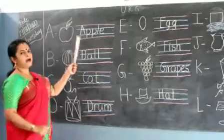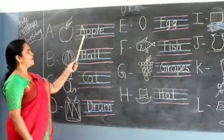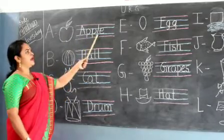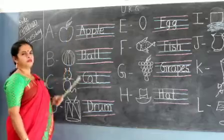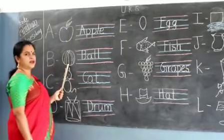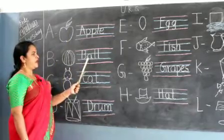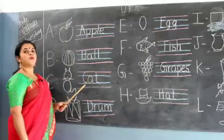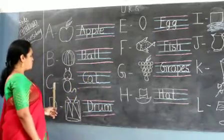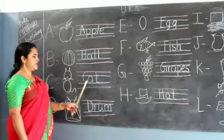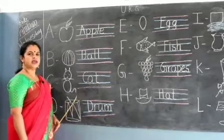A for Apple. A, P, P, L, E, Apple. B for Ball. B, A, L, L, Ball. C for Cat. C, A, T, Cat.